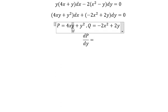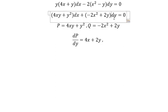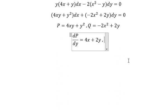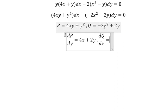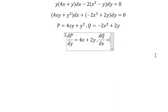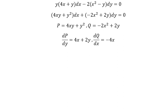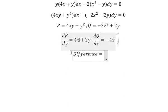That means we need to do the first derivative of M with respect to Y. For this one we have number one, this one we have two Y. We have the Y, that means we need to do first derivative of N with respect to X. So this one we have two X, so negative number two with number two we have negative four X. We can see that this one and this one they are not the same.